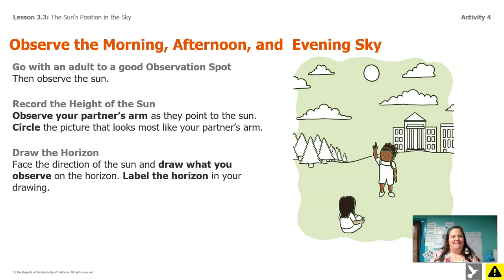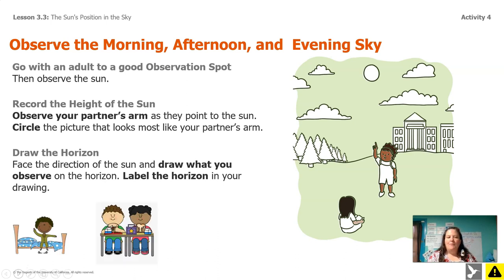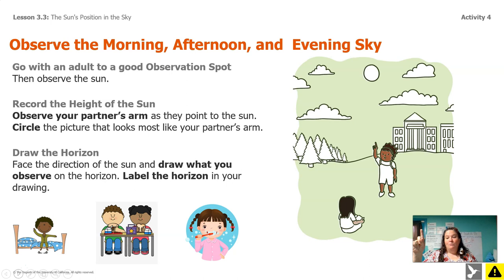Let me tell you what I want you to do before we get together next time. I want you to make three observations: one for the morning, one for the afternoon, and one for the evening. Go with an adult to a good observation spot and observe the sun. Use the pointing-at-the-sun hand signals with your partner to decide where the sun is in the sky, and then carefully draw the horizon from where you're looking. Once in the morning right after you get up, once in the afternoon — anytime after lunch will work — and once right before you go to bed. If you can just make one, that's fine too, but I do want you to make some observations. I'm going to make one more observation myself before I meet you guys next time, because I still need to do the evening. Have a great time, guys. I'll see you next time.